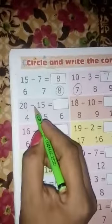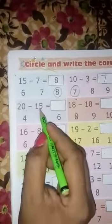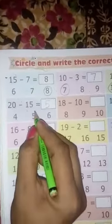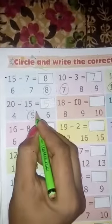Next, 20 minus 15 equal to, 20 mein se 15 gaya hai to 5. Who is the right answer? 5 is the right answer, circle number 5.